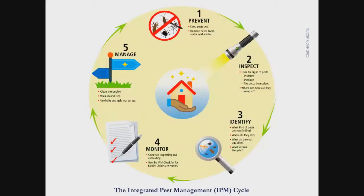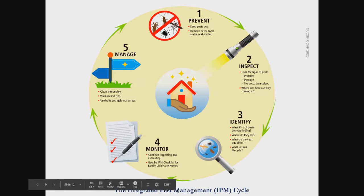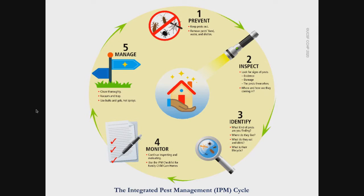We've developed an Integrated Pest Management curriculum that highlights the cycle of IPM and how it works to reduce pesticide exposure. We start with prevention: keep pests out, remove their food, water, and shelter. The next level is inspection: look for signs of pests, evidence, damage, and the pests themselves. Then identify and monitor the pests, keeping track of numbers. Finally, manage on a daily basis by cleaning thoroughly, vacuuming, and using traps. If you need to use a pesticide, use baits and gels, but do not use sprays.